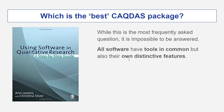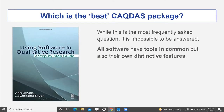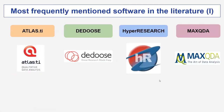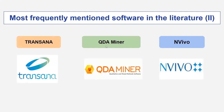They posed the question: which is the best CAQDAS package? While this is the most frequently asked question, it is impossible to answer, because all software have tools in common but also their own distinctive features. You will have to decide based on what you want to do in your research. Some of the most frequently mentioned software in the literature are MAXQDA, ATLAS.ti, HyperResearch, Transana, QDA Miner, and of course NVivo, which is the one we will be presenting today.